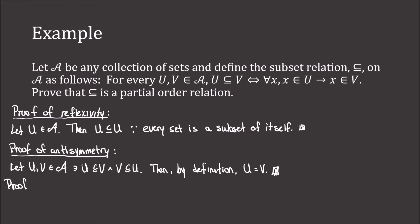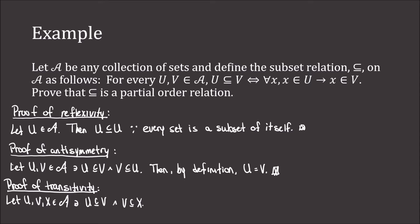For transitivity: let U, V, and X be three sets in A such that U is a subset of V and V is a subset of X. For any element A in U, A is in V, which means A is in X. Therefore U is a subset of X, and the relation is transitive. The proof that the subset relation is a partial order relation is thus complete.